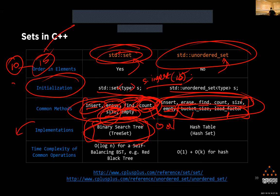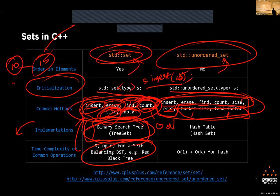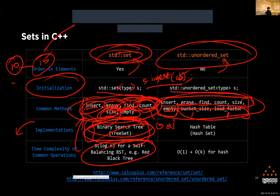The time complexity of all set operations using a tree-based set is O(log n), because the underlying tree operations are O(log n). However, if you use a plain BST that is not self-balancing — not an AVL tree or similar — then in the worst case it degrades to O(n).